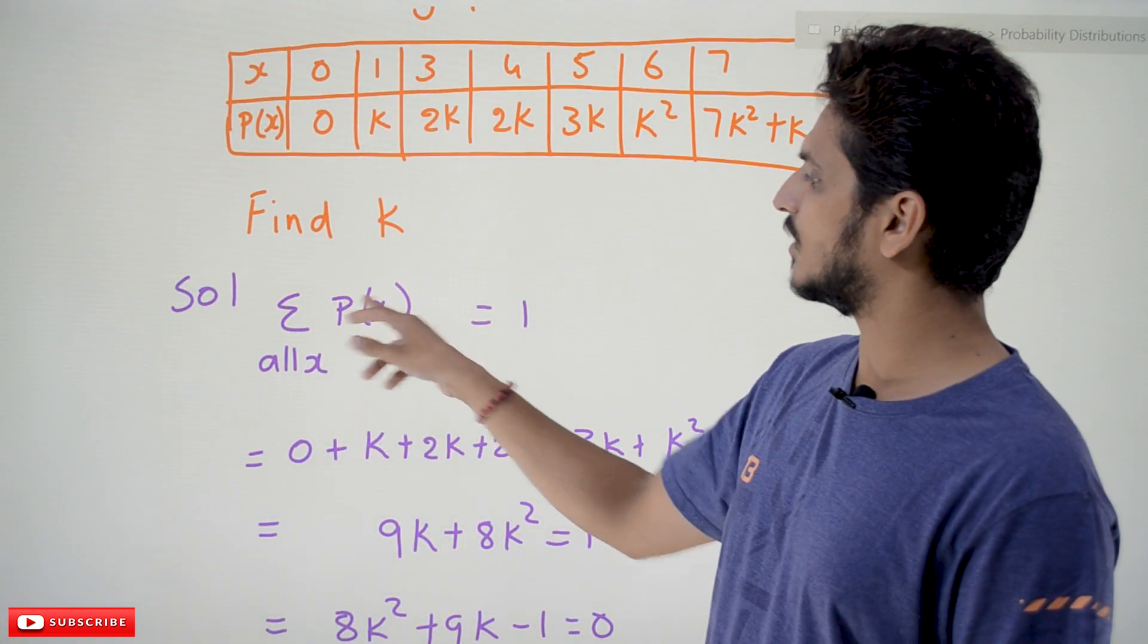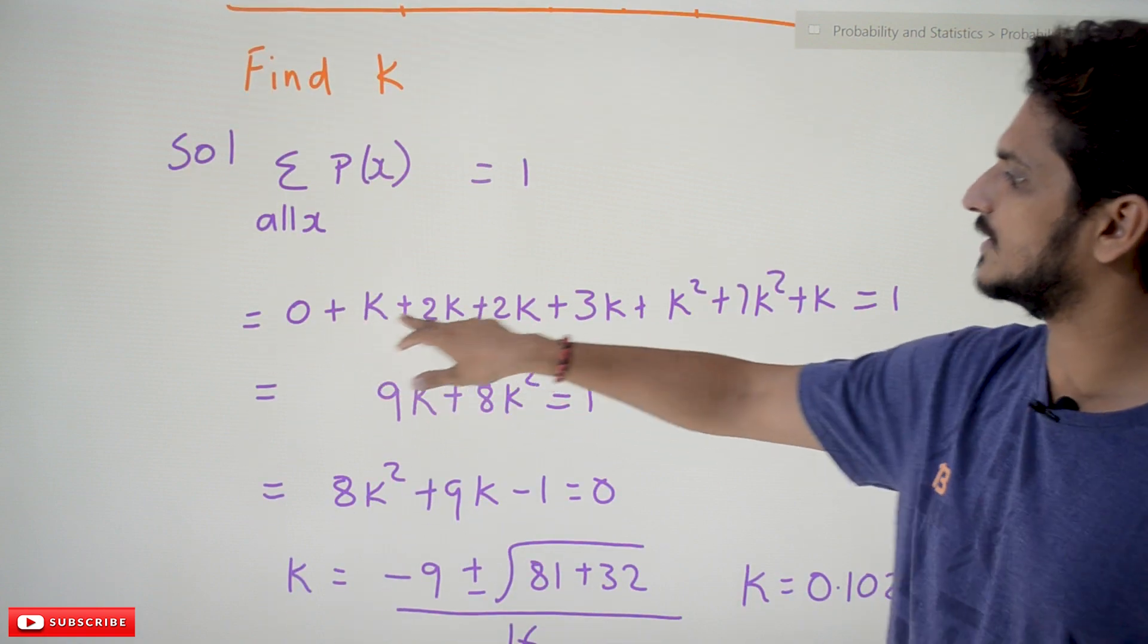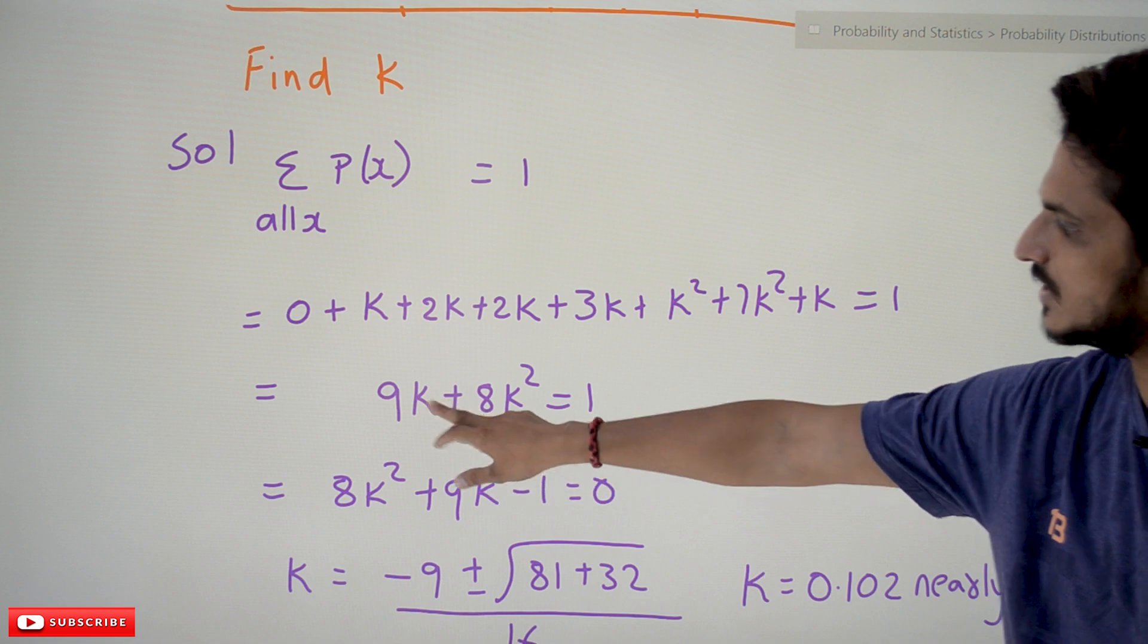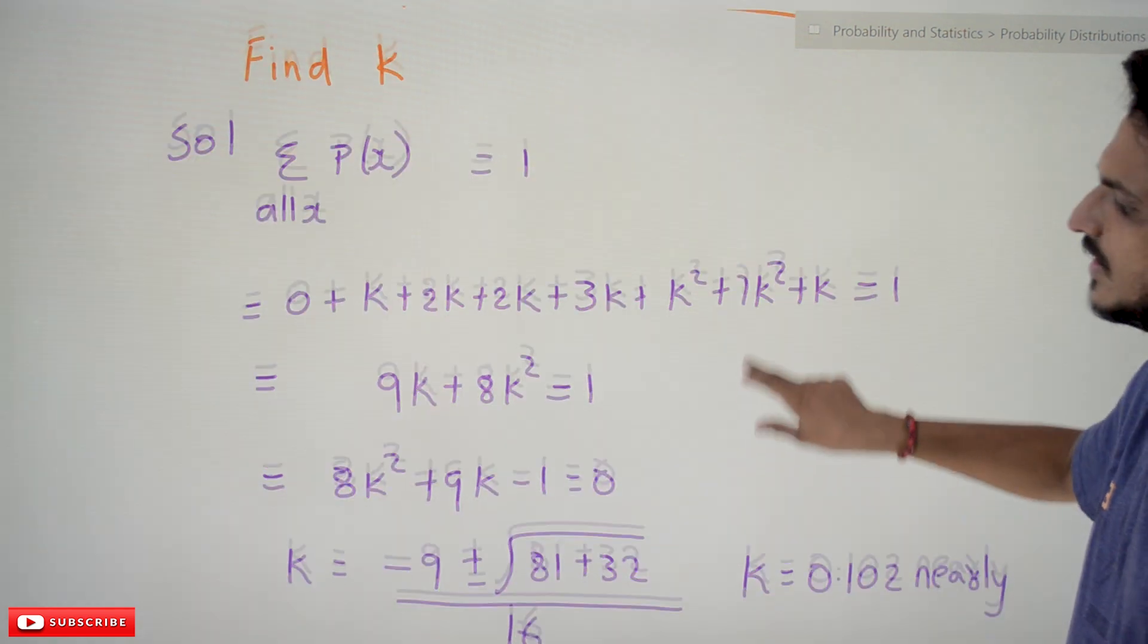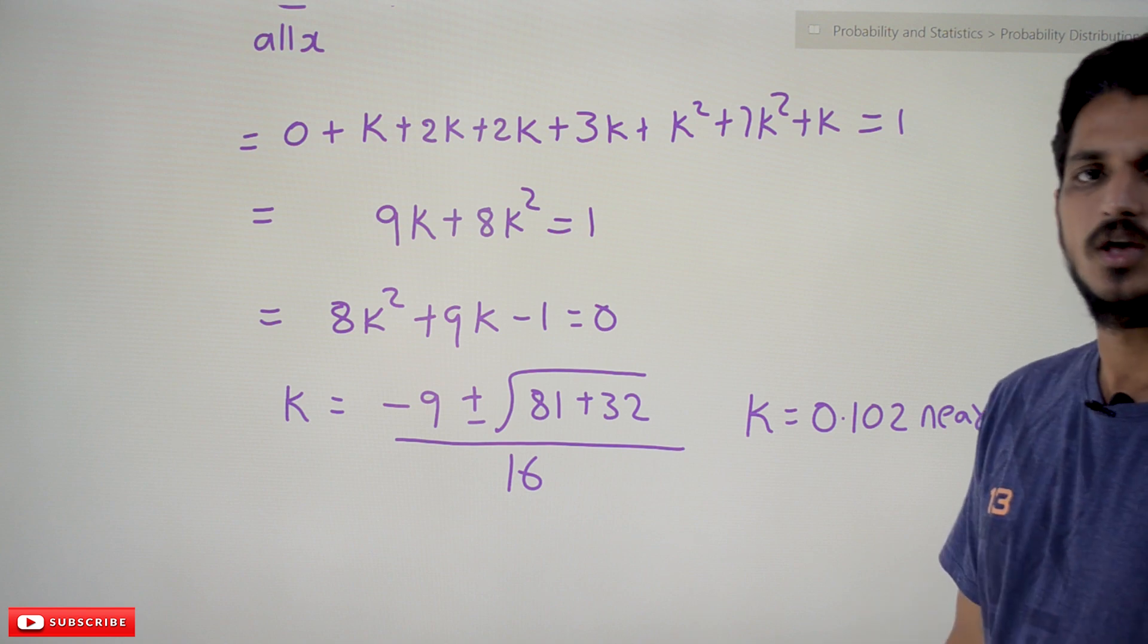So from that we will get 0 + K + ... = 1. If you substitute, finally we will get the equation 9K + 8K² = 1, or 8K² + 9K - 1 = 0.